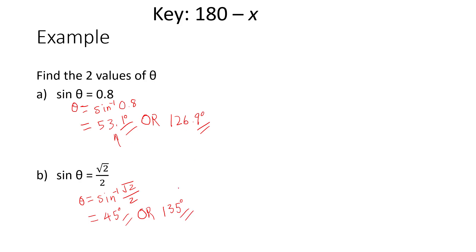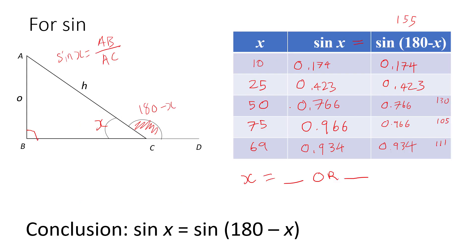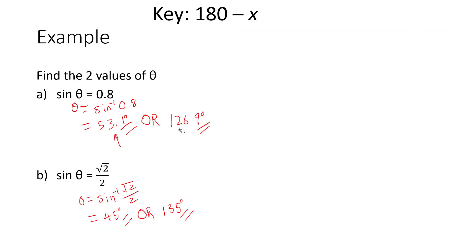How do I get these two answers? Remember the earlier conclusion: sine x equals sine(180 minus x). So how I got 126.9 is simple — I just do 180 minus 53.1 to get that second answer. Same thing: 180 minus 45 gives 135, because these two answers have the same sine value.